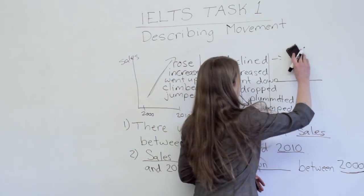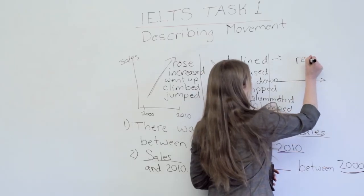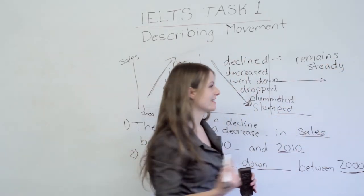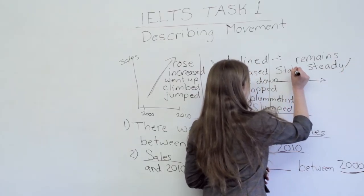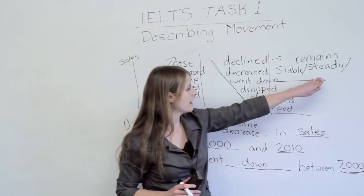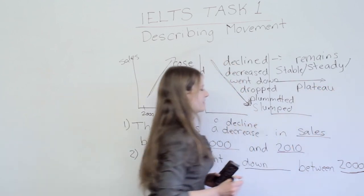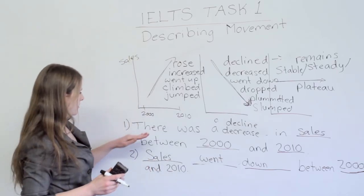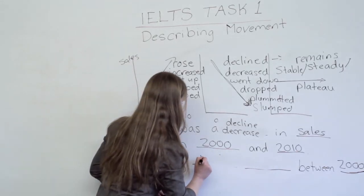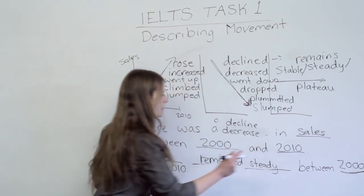The third trend is when nothing changes. You can say it 'remains steady' or 'remains stable.' You can also call this a plateau. So for example: 'Sales remained steady between 2000 and 2010.'